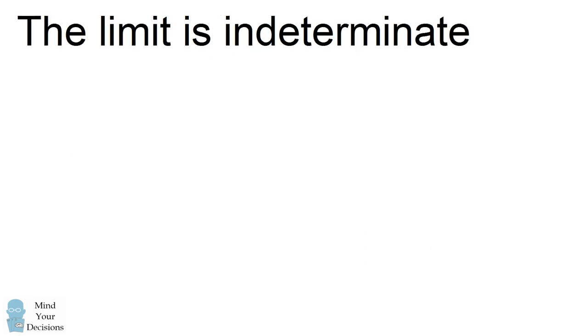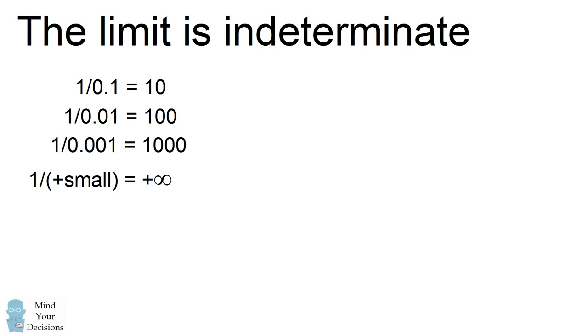But Siri said that zero divided by zero is indeterminate. So what does that mean? Well, think about dividing one by smaller and smaller decimals. If you take positive decimals you will eventually get that one divided by these smaller and smaller positive decimals will be plus infinity.